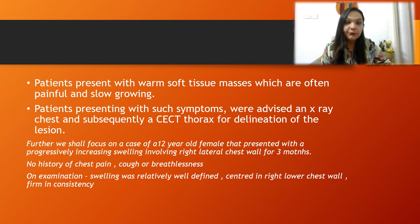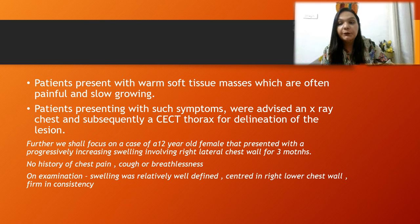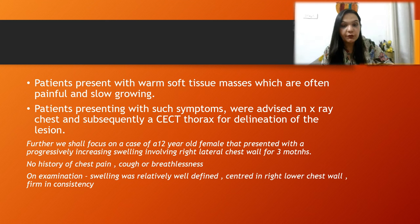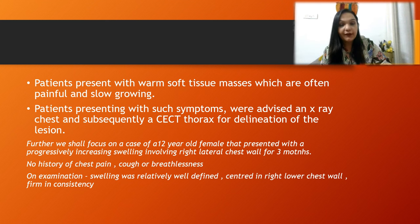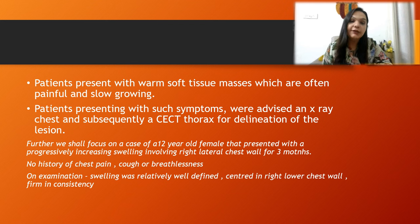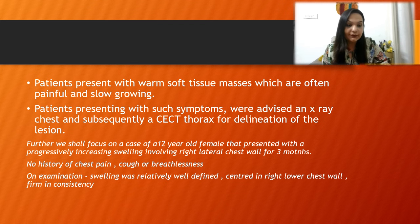Our first case is a 12-year-old female who presented in the OPD with a progressively increasing swelling involving the right lateral chest wall for approximately three months. There was no history of chest pain, cough, or breathlessness, ruling out other pathologies. On examination, the swelling was relatively well-defined, centered in the right lower chest wall, and firm in consistency.